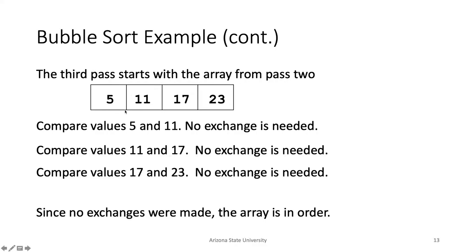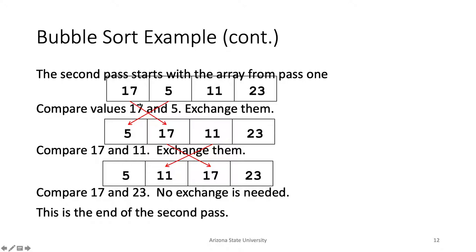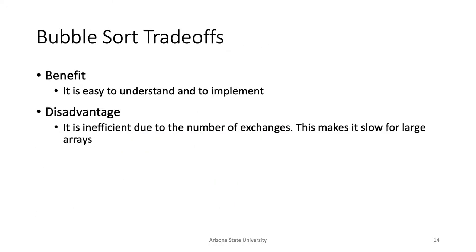That's how bubble sort works — you make incremental changes to the array, moving elements closer to wherever they need to go. The trade-offs: it's easy to understand because you just make passes and swap as necessary, and it's easy to implement. However, it's inefficient due to the number of exchanges, which makes it slow for large arrays.